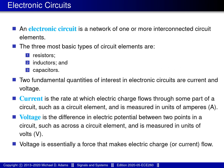Electronic circuits are pervasive in the world in which we live, appearing in consumer electronic devices such as phones and computers, home appliances such as microwave ovens and dishwashers, medical equipment such as pacemakers and MRI machines, transportation devices such as aircraft and automobiles. An electronic circuit is simply a network of one or more interconnected circuit elements. The three most basic types are resistors, inductors, and capacitors.